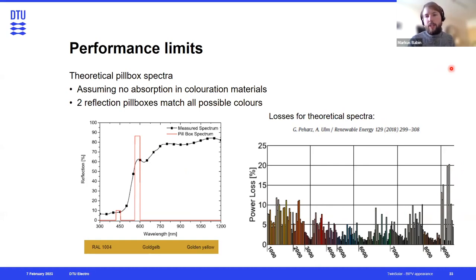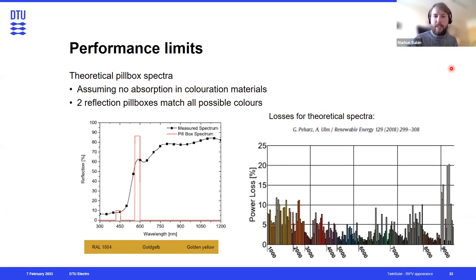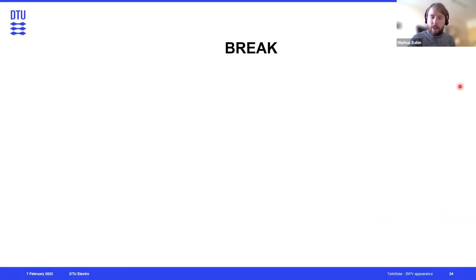So there is huge potential for optimizing these colors. However, currently the industry still operates on a trial and error basis, and most of the colored modules on the market are much lower efficiency than these theoretical limits. I hope that gave you a nice overview of what is out there in terms of coloring technologies and how they achieve coloring. Let's have some questions and then take another break.